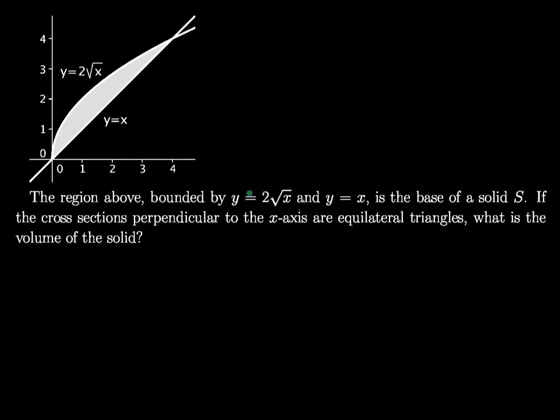But the region above bounded by y equals 2 root x, so this curve right here, 2 root x, and y equals x, so this line down here, is the base of a solid S. If the cross sections perpendicular to the x-axis are equilateral triangles, so we have the x-axis, equilateral triangles, what is the volume of the solid?